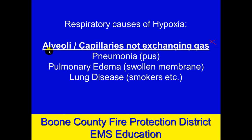Another respiratory system issue: it could be that the alveoli are just not working right — specifically that very important alveolar capillary membrane, the very thin membrane we talked about previously. Why would that not work right? Potentially it's damaged. Lung disease patients with COPD — chronic obstructive pulmonary disease — emphysema patients, patients who have smoked for a long time, have actually damaged that alveolus.